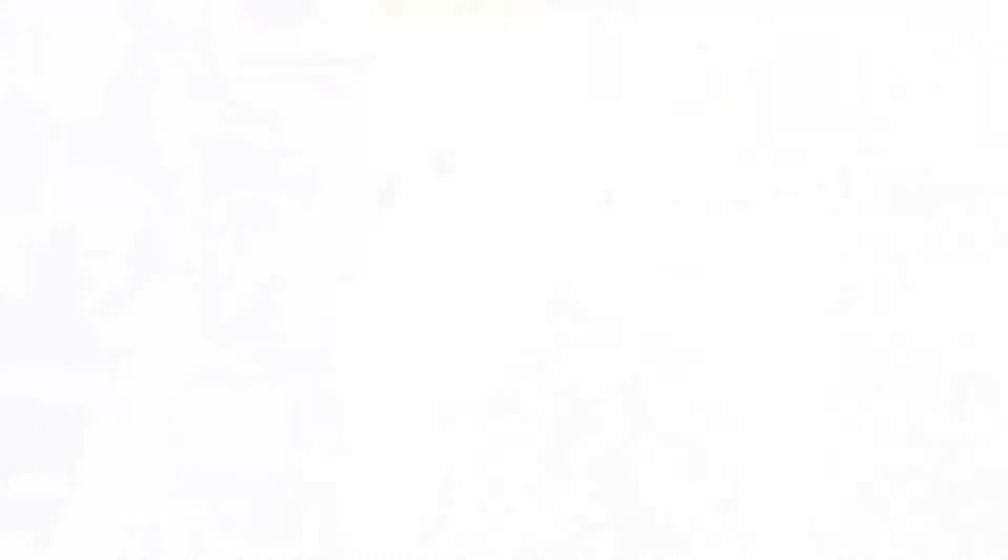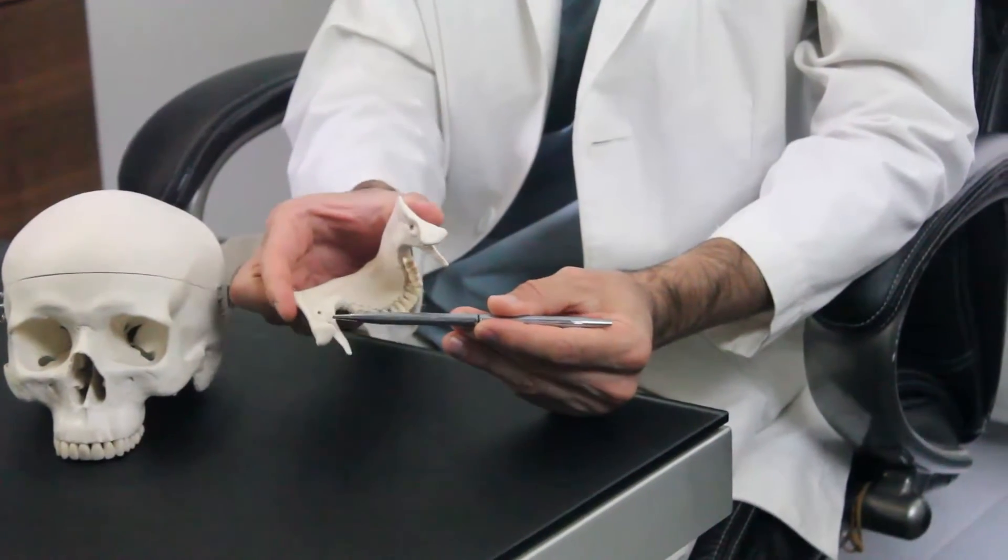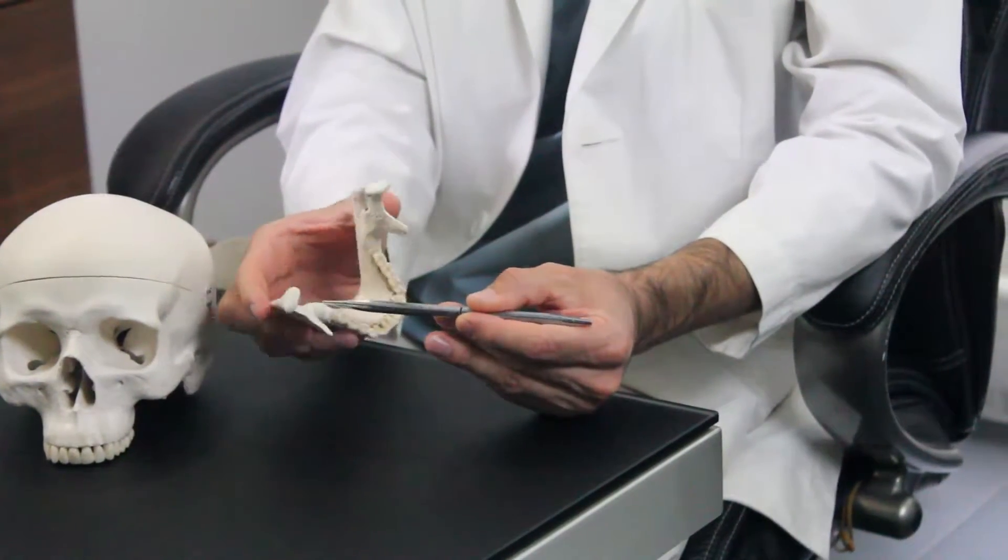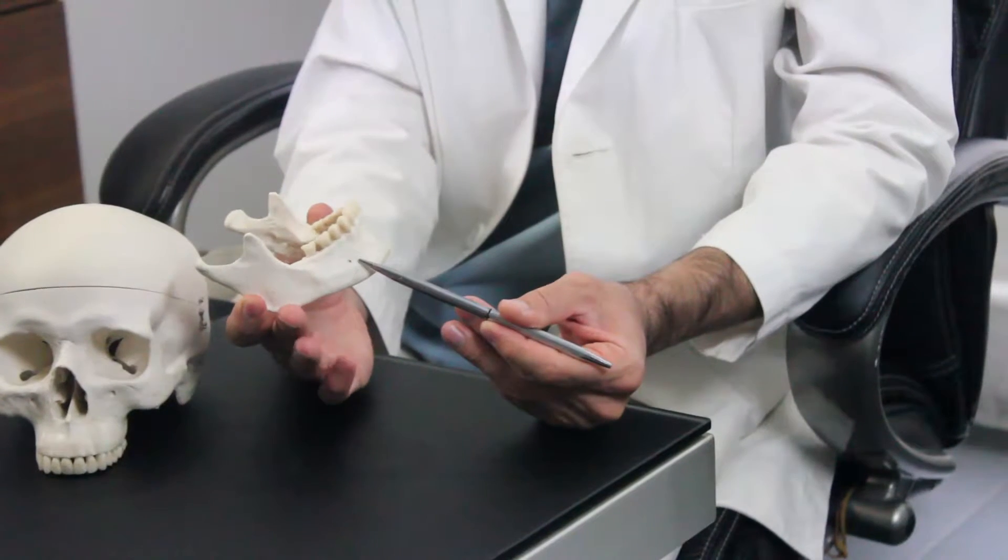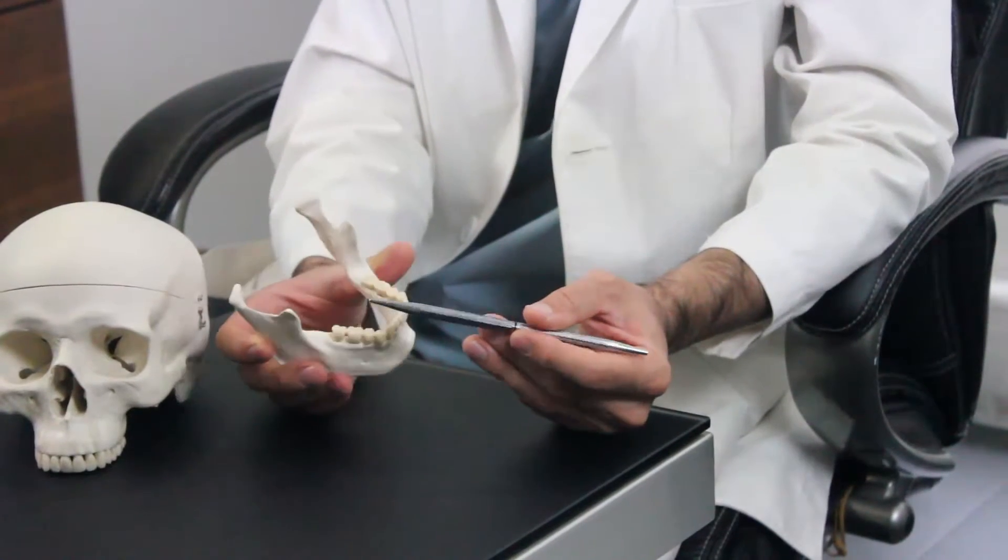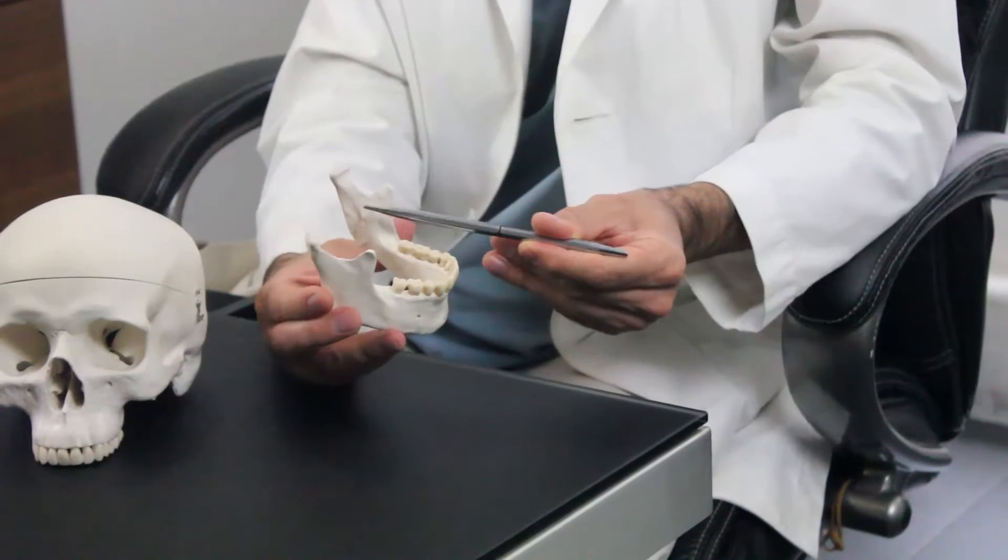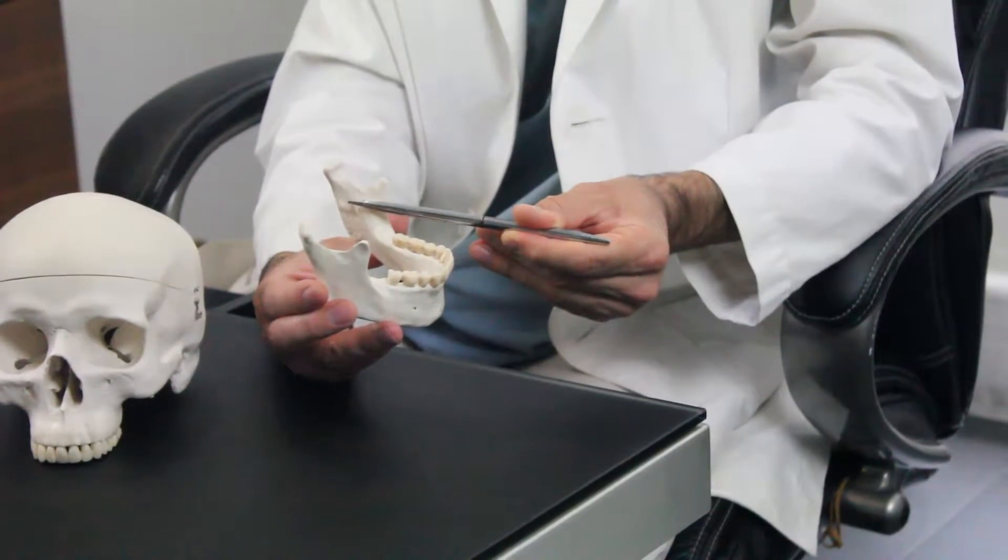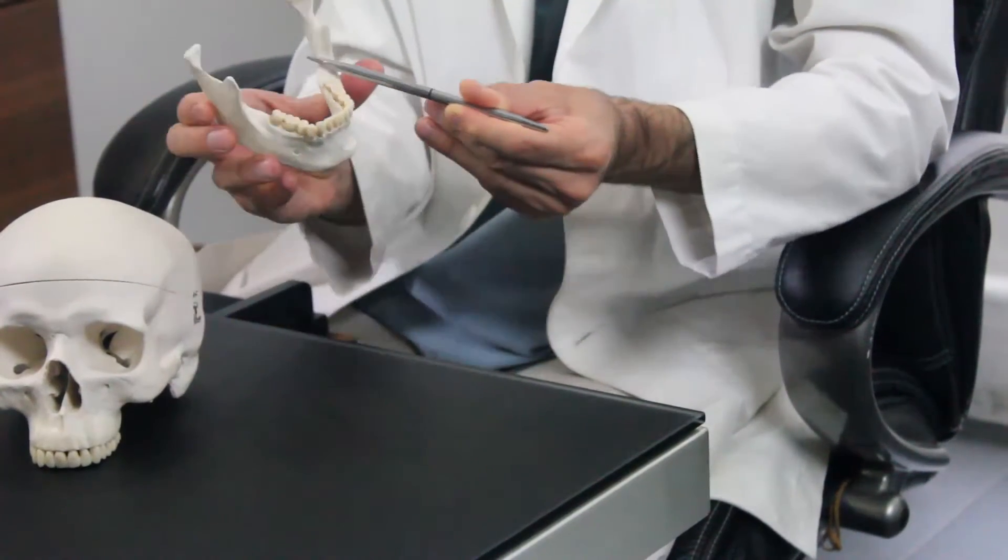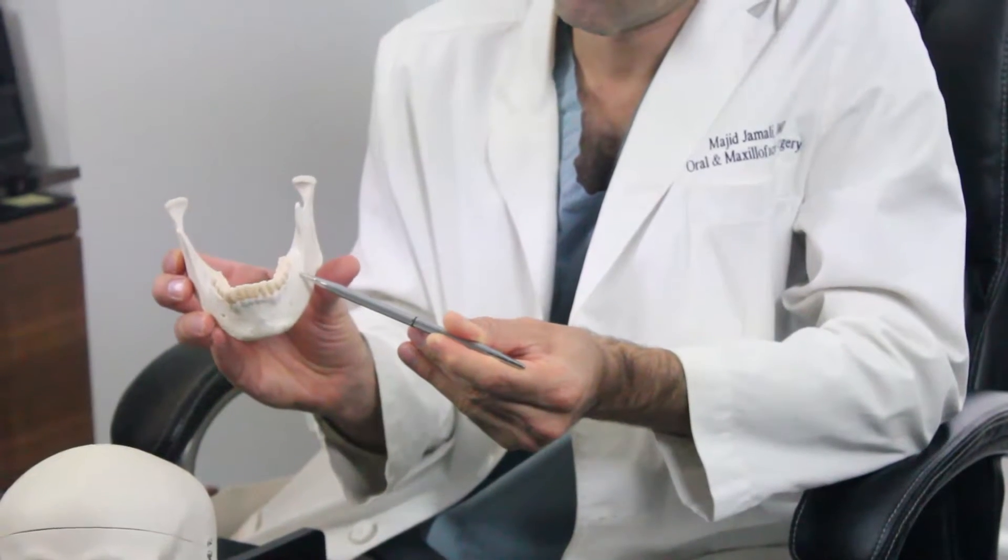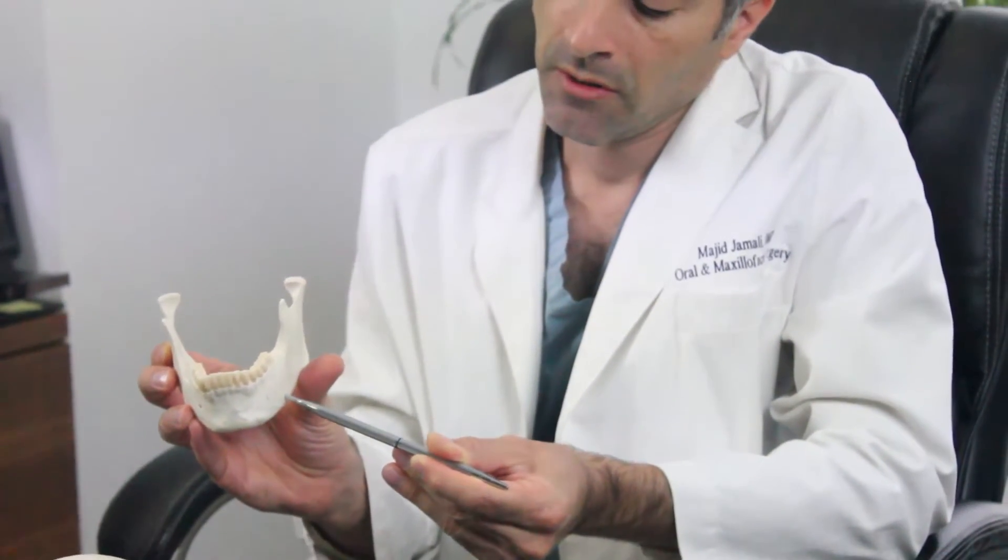The lower jaw surgery is a little bit different. There is a nerve in the jaw that travels through the jaw and comes out here. So we carefully do an osteotomy above the nerve and go with the burr or saw here.